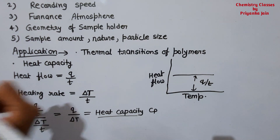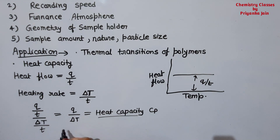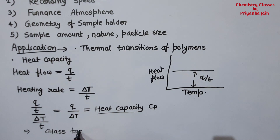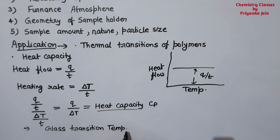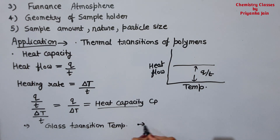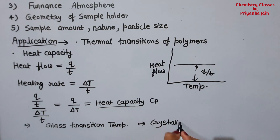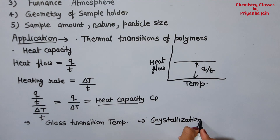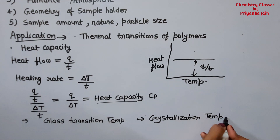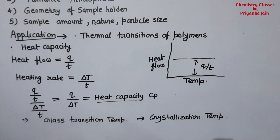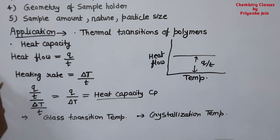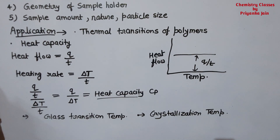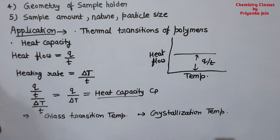Another application is finding the glass transition temperature. We can also use DSC to find the crystallization temperature, and we can also determine whether a polymer sample is crystalline or amorphous. This covers all about DSC — differential scanning calorimetry.